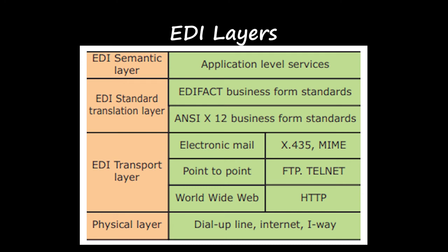The EDI semantic layer is the application-level service. The EDI standard translation layer includes business form standards such as EDI FACT and ANSI X12. The EDI transport layer covers electronic mail (X435 or MIME), point-to-point communication (FTP, Telnet), and the World Wide Web (HTTP). The physical layer consists of a dial-up line or the internet.